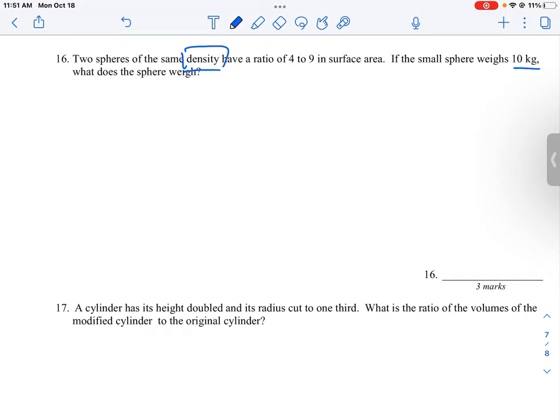Let me write the formula for density on the side here. Density equals mass divided by volume. Now we're seeing volume come into play, and if we rearrange this, we can say that volume times density equals mass.